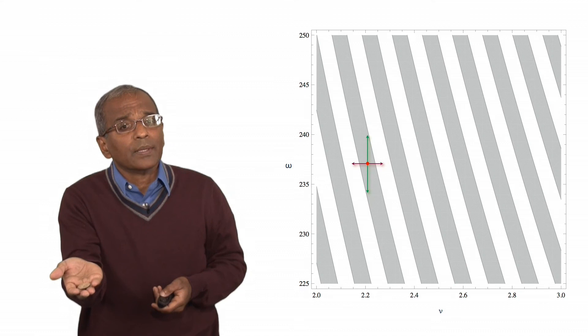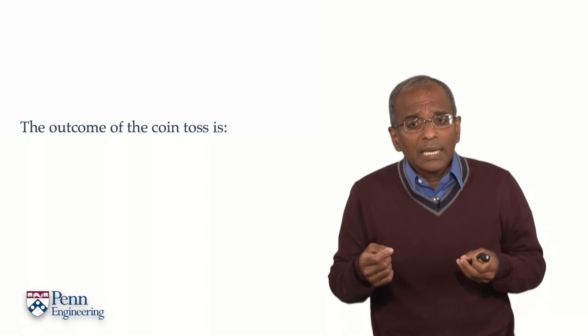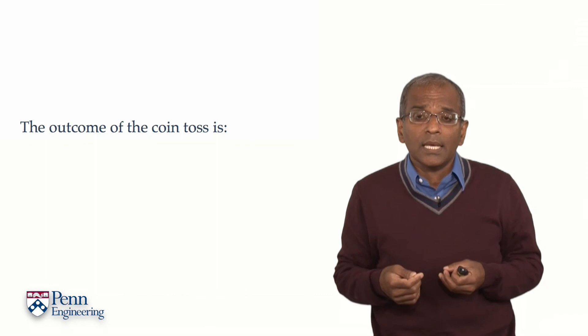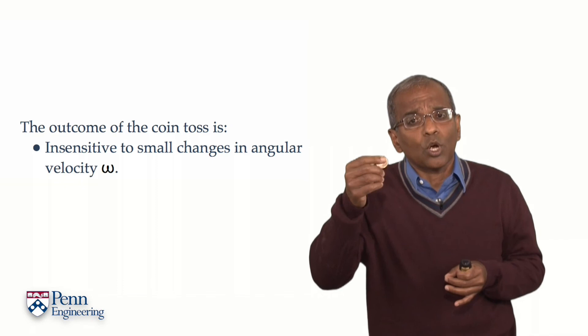So, the outcome of the coin toss is, for the kinds of velocities and angular velocities encountered in practice, relatively insensitive to small changes in angular velocity.